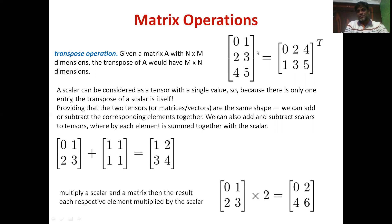The first row of the original matrix becomes the first column, the second row becomes the second column, and the third row becomes the third column, making it a two by three matrix. If you observe a scalar, it can be considered as a tensor with a single value, so the transpose is also going to be the same. A^T is equal to A if it contains only a single element.